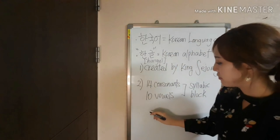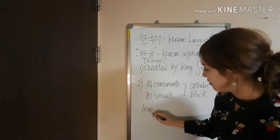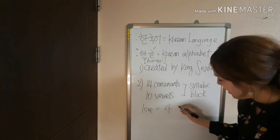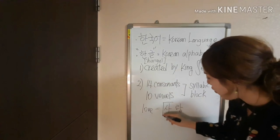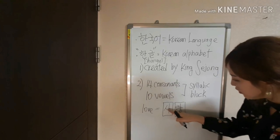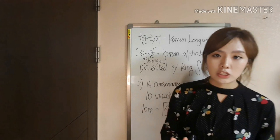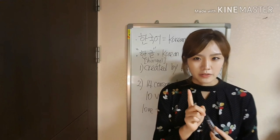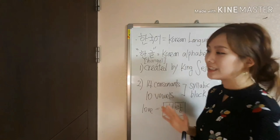For example, if I write 'love' in English, it's L-O-V-E. But in Korean, we say 사랑. This is one block, and this is another block — it's a combination of consonants and vowels. There are so many combinations for one syllable. I'll tell you more about those things in later videos, but today I'll end here. This will help you when you're learning 한글 later on.